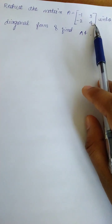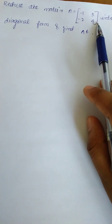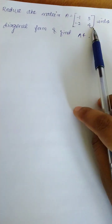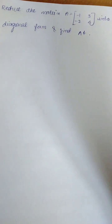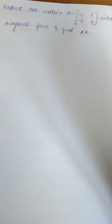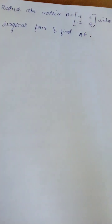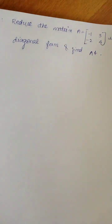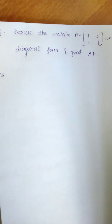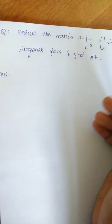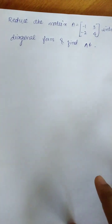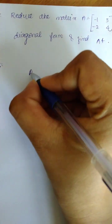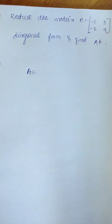If the matrix is 2 by 2, you have a chance of 3 by 3. That's why you have to practice 2 by 2. How do you do diagonalization? We have to study the other matrix from the previous video. We have to use eigenvalues and eigenvectors.